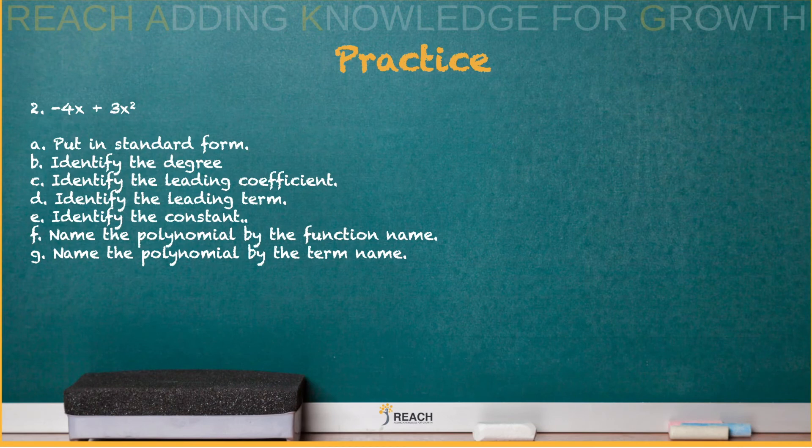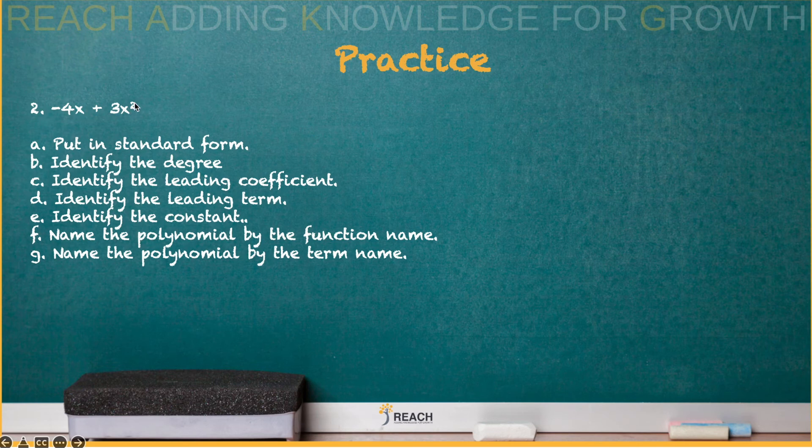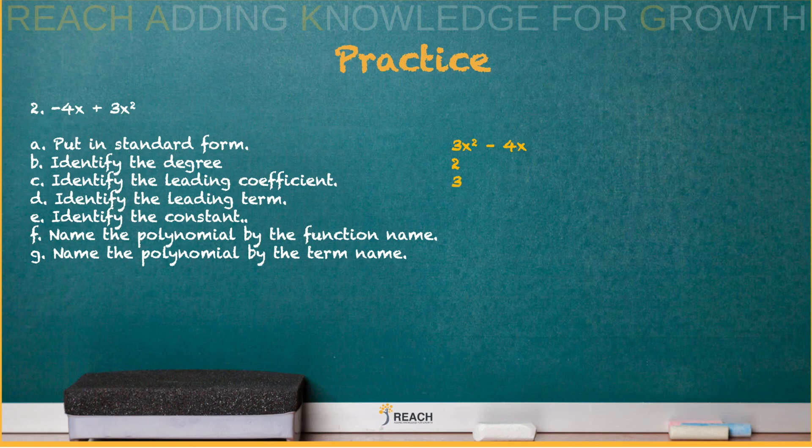Number two. All right, let's put it in standard form. We only see one and a two, so the highest would be the two and then the one. All right, degree. The degree is the highest exponent, which is two. The leading coefficient, what's the number in the very front? Three. All right, leading term. See this? This is just vocabulary. Knowing the vocabulary. What's the constant? There's an invisible plus zero, so you can say zero or you can say no constant.